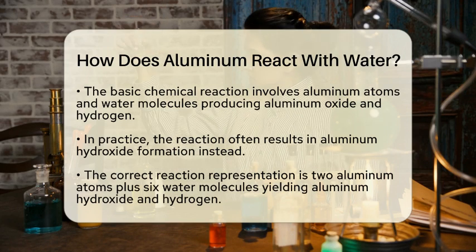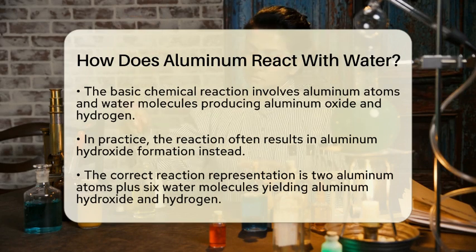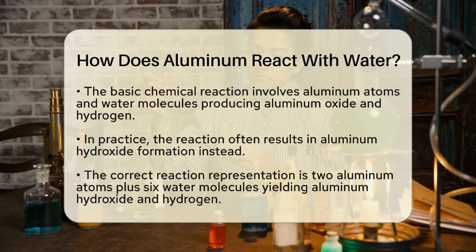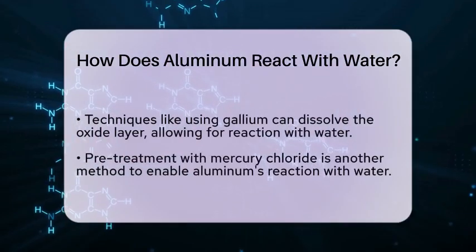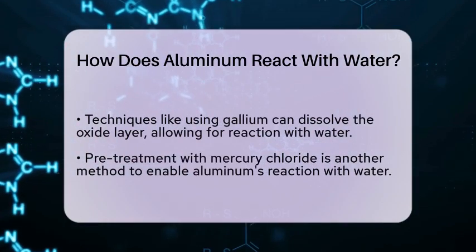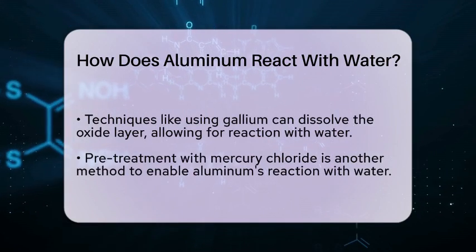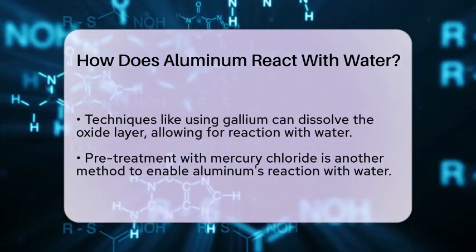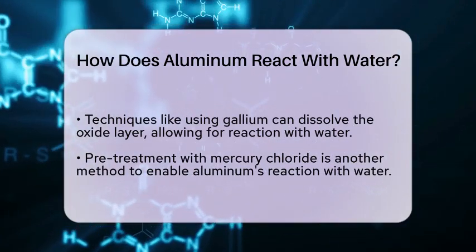To make this reaction happen, certain methods can be used. For instance, using gallium can dissolve the oxide layer, allowing aluminum to react with water. Another method involves pretreating aluminum with mercury chloride. Both techniques enable aluminum to produce hydrogen gas and aluminum hydroxide when in contact with water.